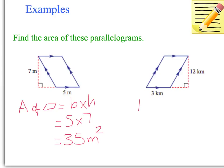The next one. Area of a parallelogram equals base times height. Base is 3 kilometres times 12. 3 times 12 is 36 kilometres squared.